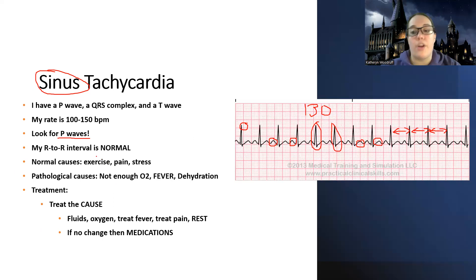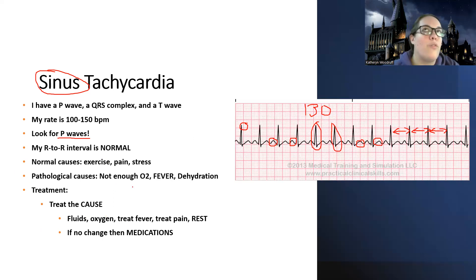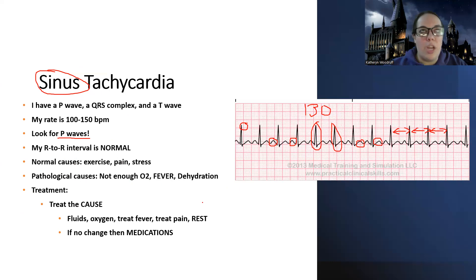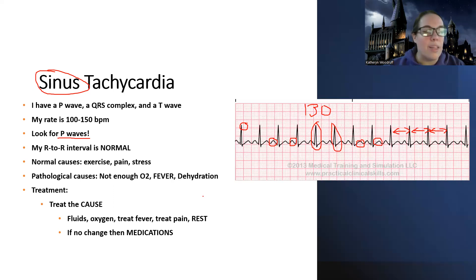With sinus tachycardia, we want to get to the cause. Sinus bradycardia can commonly be caused by a pacemaker malfunction, whereas sinus tachycardia usually has some outside factor. If a patient has a high heart rate, I'm going to look at basic things: what's their oxygen level, do they have a fever, are they in pain or stressed? We always want to treat the cause. There are meds like beta blockers or calcium channel blockers that can lower heart rate, but giving a beta blocker to a hypoxic patient doesn't fix the problem — it just masks it. Same with a fever.